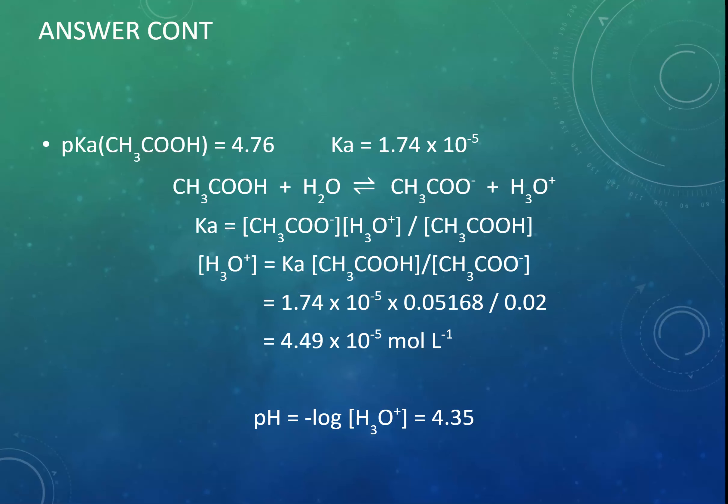Now, just a really quick note. If we are exactly halfway to the equivalence point, then the concentrations of ethanoic acid and the ethanoate ion, or the concentration of the acid and the conjugate base, would be exactly equal, because we would turn exactly half of our acid into the conjugate base. If you look at this equation, you can see that if the concentration of ethanoic acid and the concentration of sodium ethanoate were equal, then the hydronium would equal the Ka. pH equals pKa at half equivalence. So that's just a little thing to be aware of. You don't have to remember that. You can work it out from scratch every time.